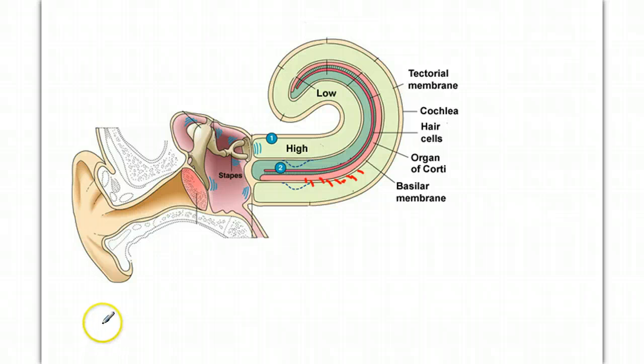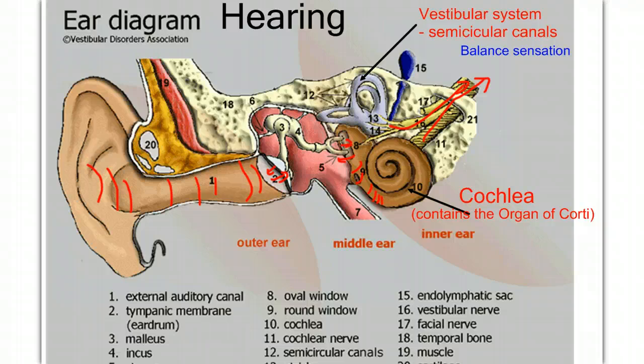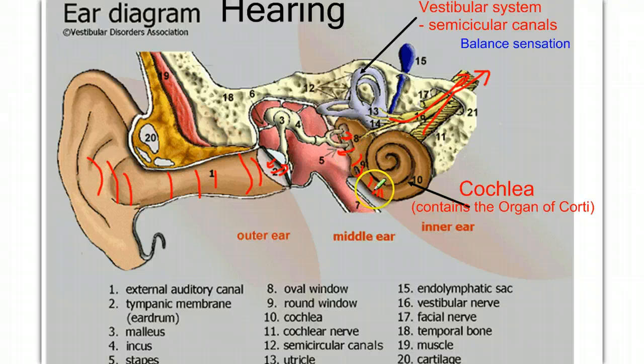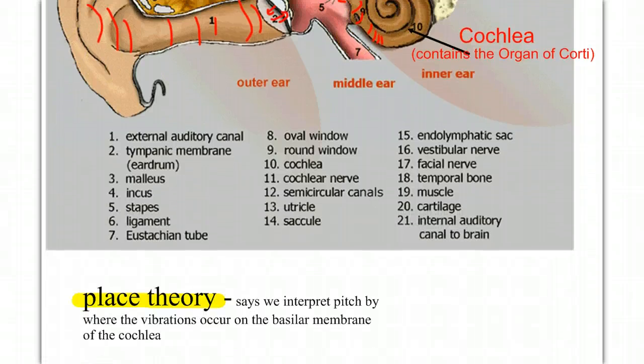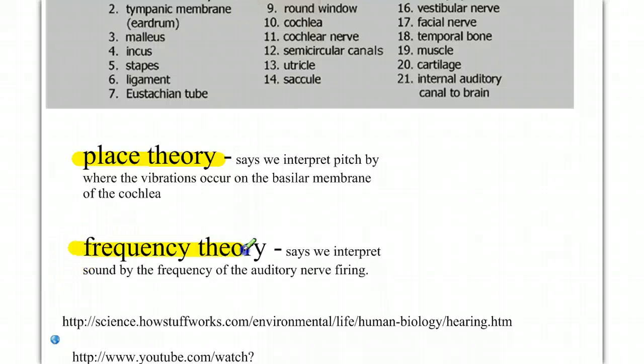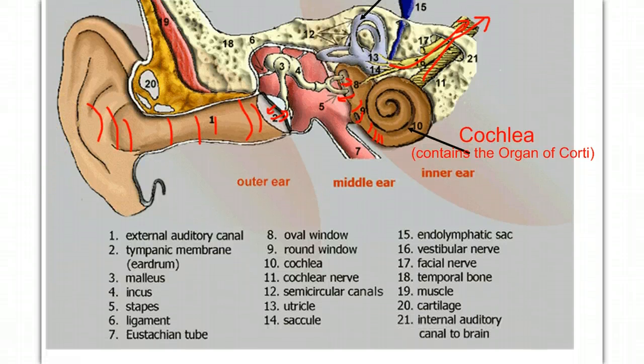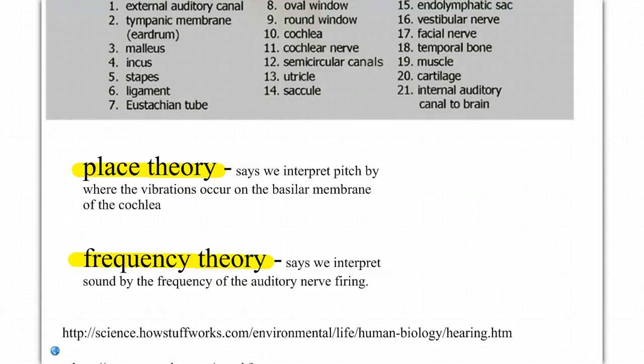The question becomes, how does the ear kind of discern pitch and frequency and volume? And there's two theories that go with this about how the ear actually is working. There's the place theory, which says that we interpret pitch based upon where the vibrations occur along that membrane. So in other words, if they occur out here versus deeper into the structure, the place on the cochlea where the hairs are deflecting represents the different pitches. The frequency theory says we interpret the sound by the frequency of the auditory nerve firing. So two different theories, and I think both of them have some elements that work together to explain how the ear works.